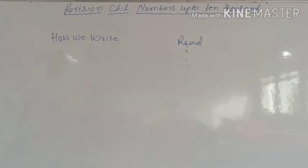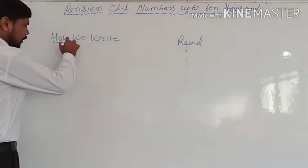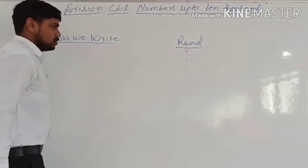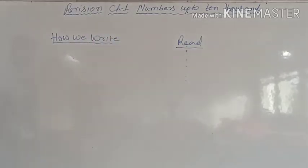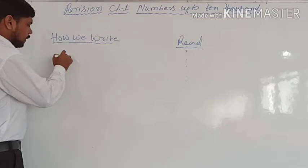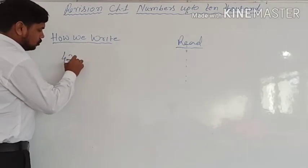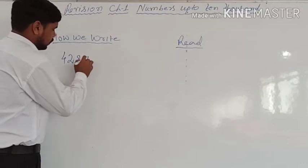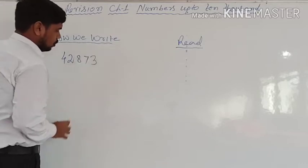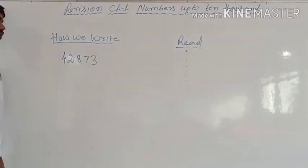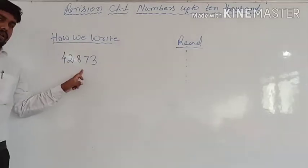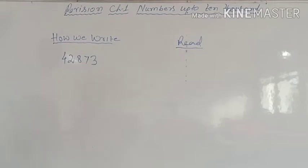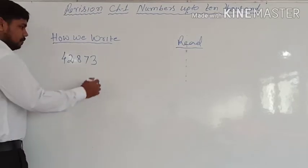Now the question is: how can we write and read numbers? This is very easy. Suppose I take the number 42,873. You have to read this number. How do we read it? First, identify the place values from right to left: ones, tens, hundreds, thousands, and ten-thousands.